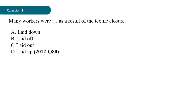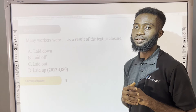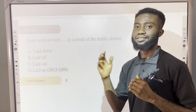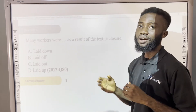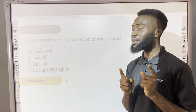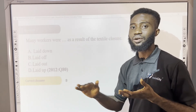Give it a try. The correct answer is option B — to lay off. To lay off is to sack somebody, so the workers were sacked due to the textile closure. It cannot be option A because lay down is to lie down on a surface.